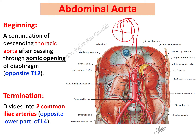The descending, or thoracic, aorta passes the posterior part of the diaphragm through the aortic hiatus, which is at the level of T12 — thoracic vertebra number 12, the last thoracic vertebra.